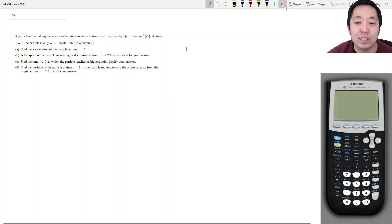Hey all, this is Alan with Bothell STEM Coach. Today we are continuing with the AP Calculus 2004 free response questions, looking at number 3. A particle moves along the y-axis so its velocity v at times t greater than or equal to 0 is given by this. At time t equals 0, the particle is at y equals 1. Note tan inverse of x equals arctan of x if you've never seen that before.